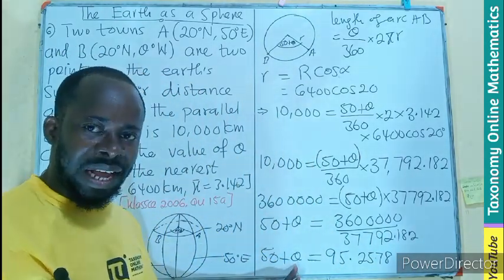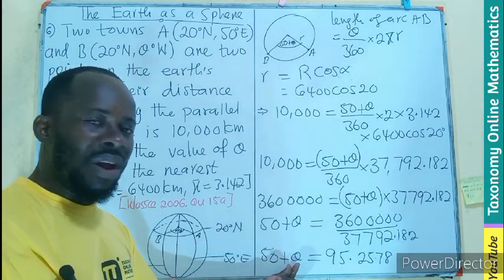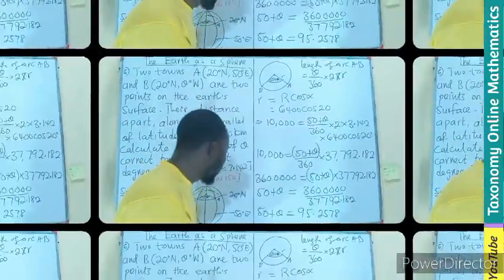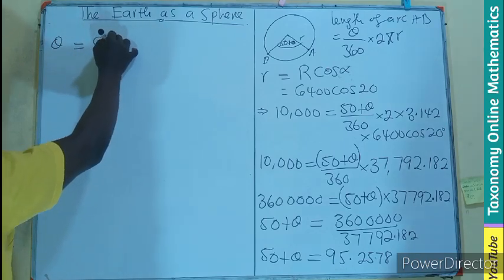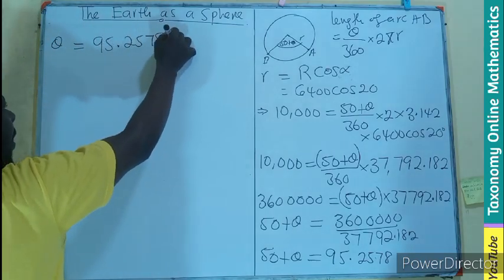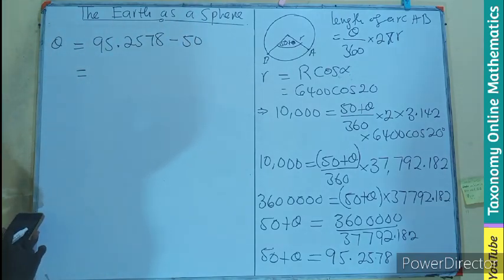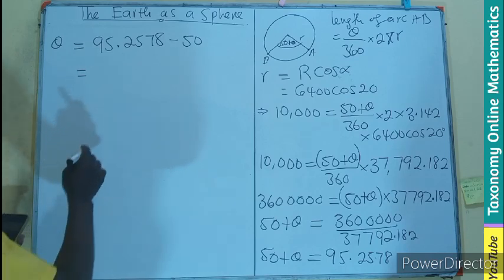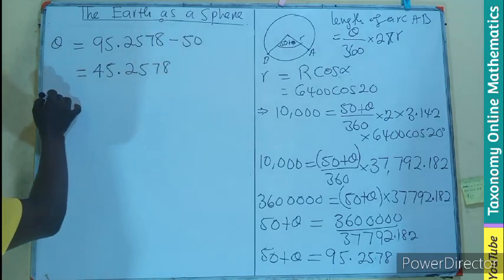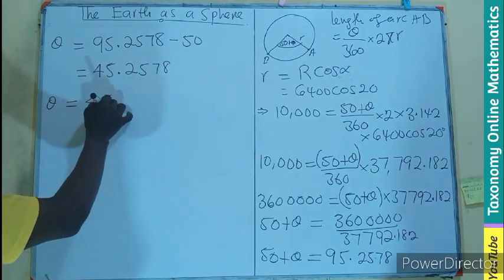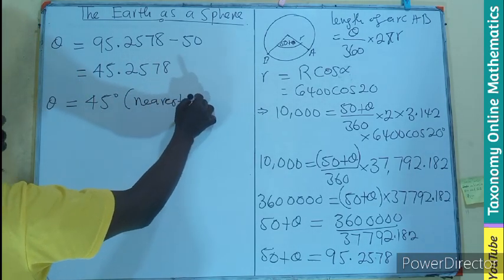Don't forget, we are looking for theta which has been having an addition of 50 here. So we subtract 50 from both sides to know what the value of theta will be. Let's check that out. So this becomes, let's maintain the theta. Have our 95.2578 minus 50. That will be 45.2578.